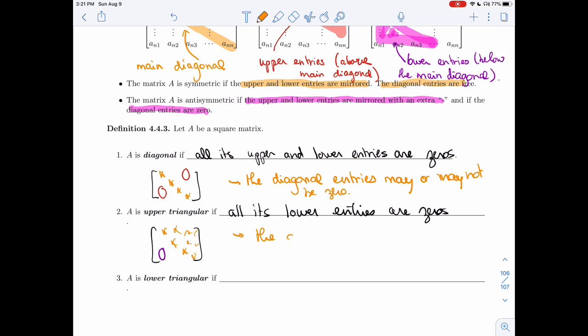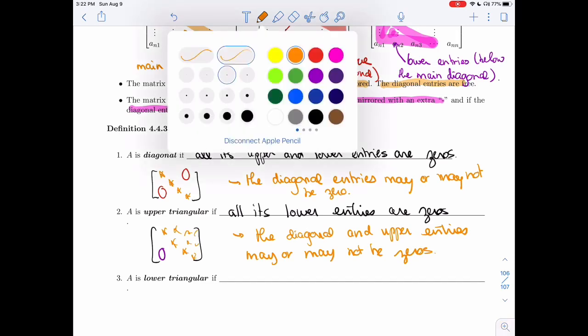So the diagonal and upper entries may or may not be 0s. So no restrictions on those, only restrictions on what goes on underneath the diagonal.